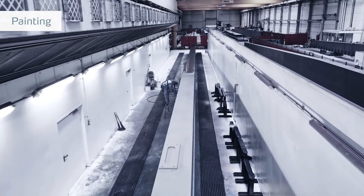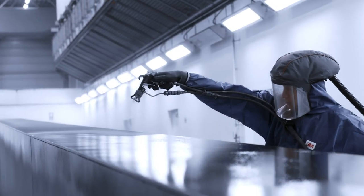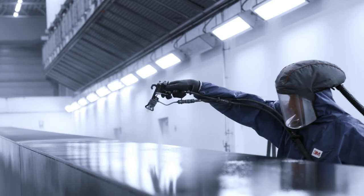In our paint shop, masts, lifting carriages, and other components are primed and painted using a wet coating procedure. Here, the required coating thickness of the paint is continuously checked and documented.